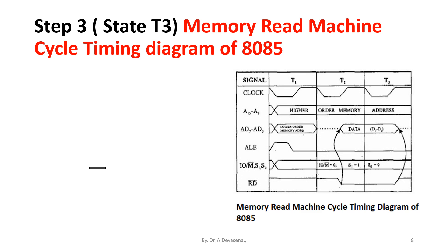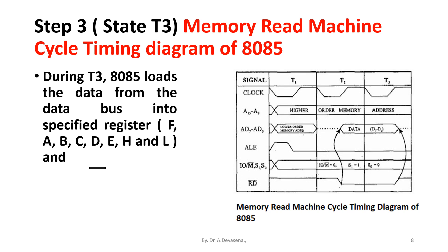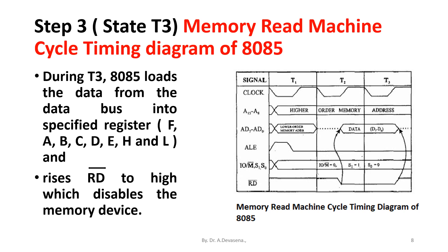Step three, T3 state: during T3, the 8085 microprocessor loads data from the data bus into the specified register — that is, F, A, B, C, D, E, H, and L — and raises the Read bar signal to high, which disables the memory device. The Read bar signal rising from low to high is indicated here.